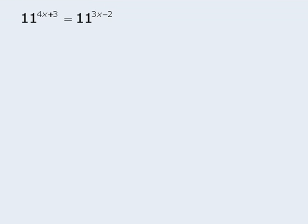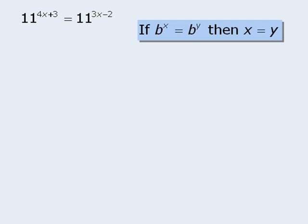Notice that in this equation, we have base 11 on both sides. We have a rule that says if b to the power of x equals b to the power of y, then x must equal y. So if 11 to the power of 4x plus 3 equals 11 to the power of 3x minus 2, it must be the case that the two exponents are equal. When we solve this equation, we can see that the solution is x equals negative 5.